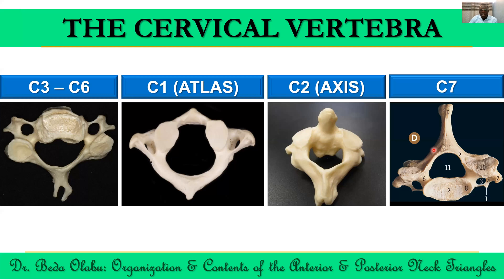The C7 vertebra, called vertebra prominens, is not typical because of what we've already mentioned. The spinous process of C7 is prolonged and longer compared to the others; however, it is not bifid, and it projects more posteriorly. C7 usually lacks the foramen transversarium. So C1, C2, and C7 are atypical cervical vertebrae.